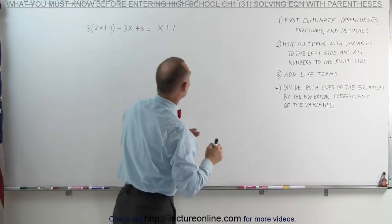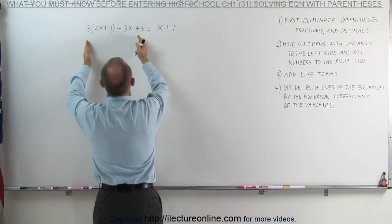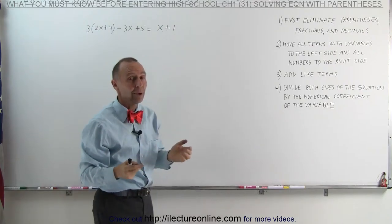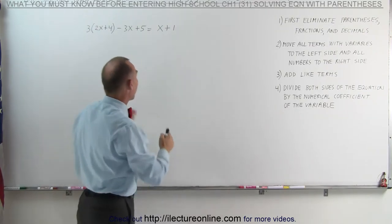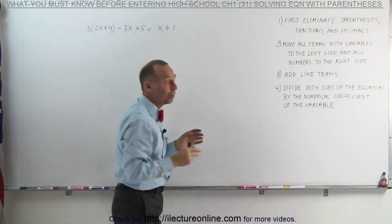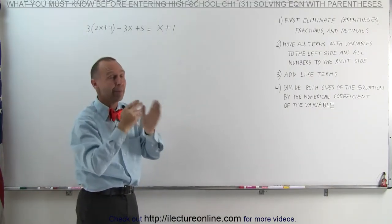Secondly, we're going to move all the terms that have the variable in it to the left side of the equation and all numbers without the variable to the right side of the equation. The third step, we're going to add like terms. Add all the terms on the left side, add all the terms on the right side. Presumably, when we separate it, all the terms will be like terms and so we can combine those terms.